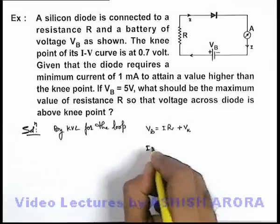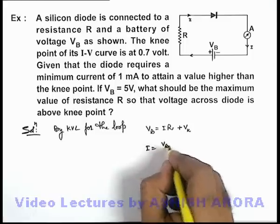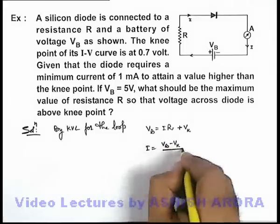Now the current in the circuit is V_B minus V_K divided by R.